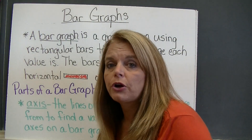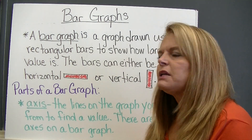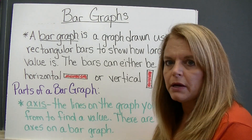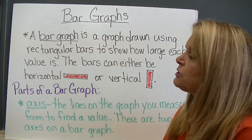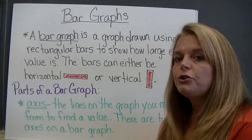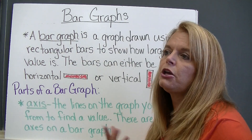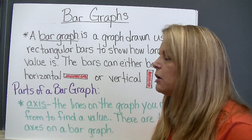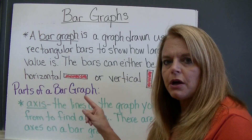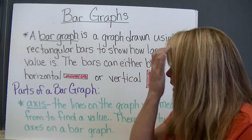In this video we're going to talk about bar graphs. You've probably seen bar graphs and read bar graphs, but it's important to know the different pieces and parts that make up a bar graph, and that's what we're going to learn about today. A bar graph is a type of graph that's drawn using rectangular bars to show how large each value is. The value is the data that you've collected. The bars on a bar graph can either be horizontal, going across, or vertical, meaning they go up and down.